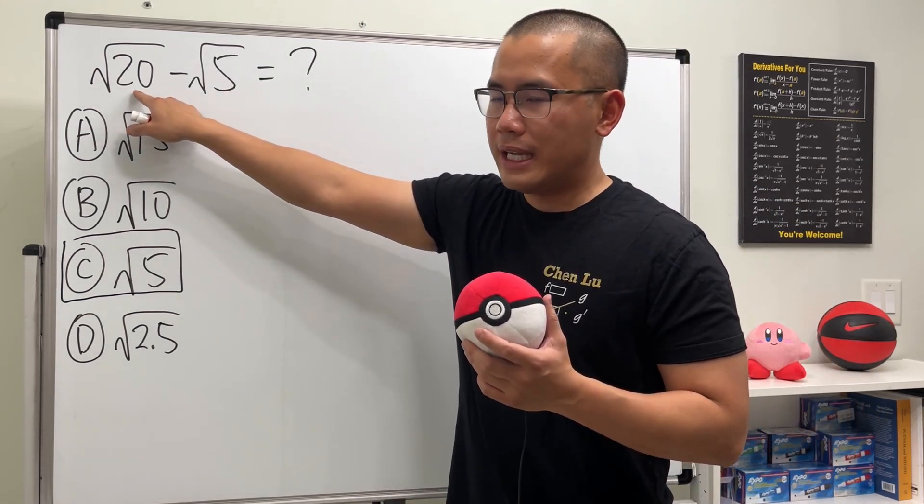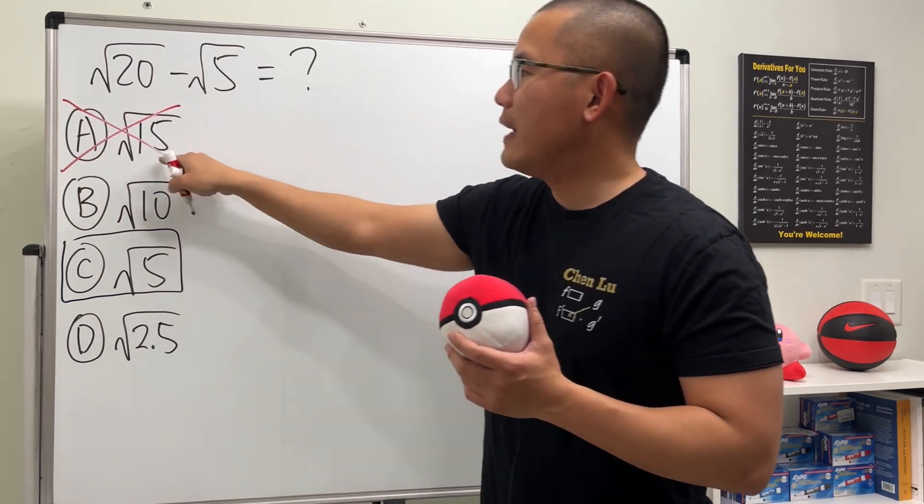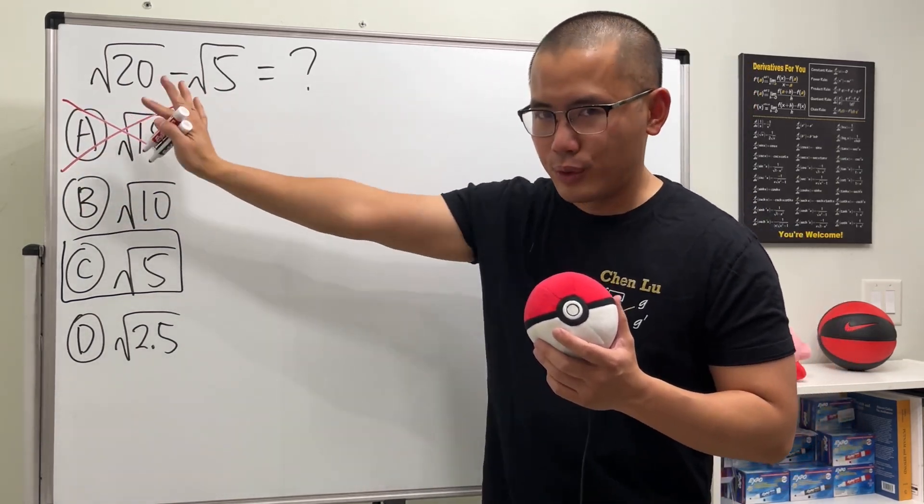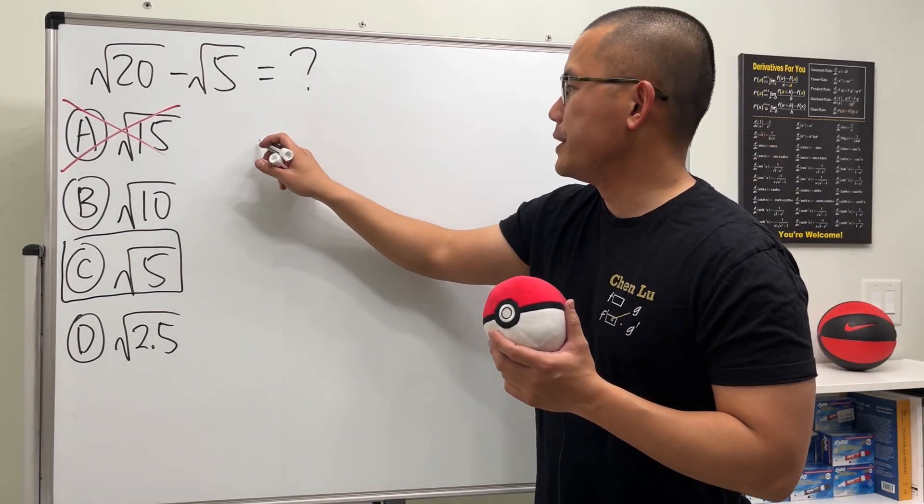Firstly, do not do 20 minus 5 and say the answer is 15 in the square root. No, this is a very common mistake. No, don't do that. This is not a way to subtract square root. Let me show you how this is supposed to be done.